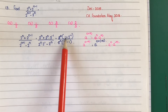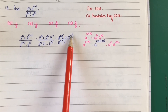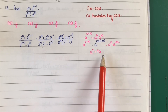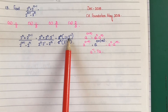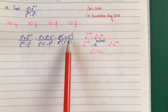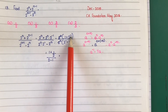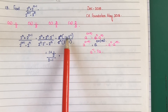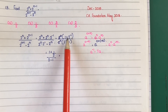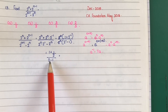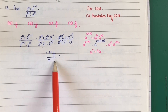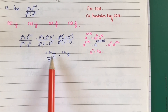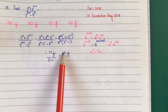2 raise to n is common and cancels. Now we have 1 plus 2 raise to minus 1 in the numerator. Using a raise to minus 1 equals 1 by a, we get 2 raise to minus 1 equals 1 by 2. The denominator becomes 2 raise to 1 minus 1, that is 2 minus 1, which equals 1. So the expression becomes 1 plus 1 by 2.